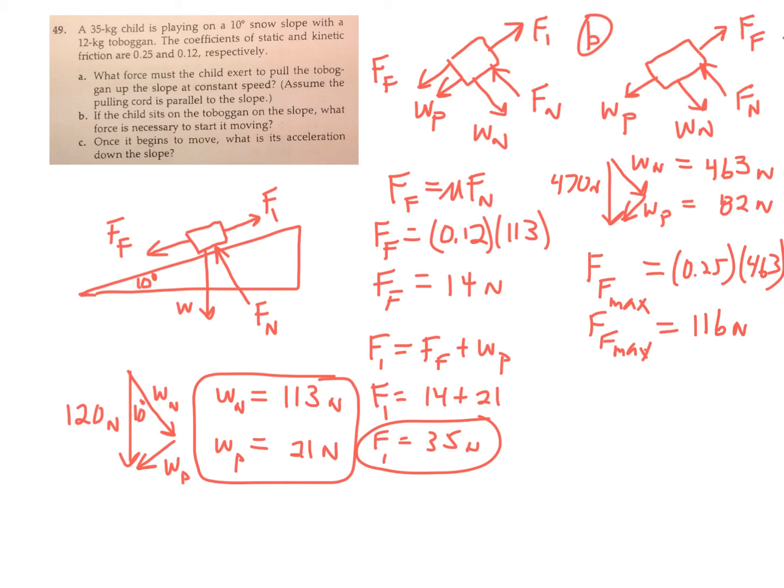So I need a force equal to or greater than that to get the sled to go down the hill. Well, W sub P right now is 82 newtons. So I have an 82 newton force trying to make the sled go down the hill. So if that's all we have, the frictional force would be 82. It would match it because we don't need more than that right now.